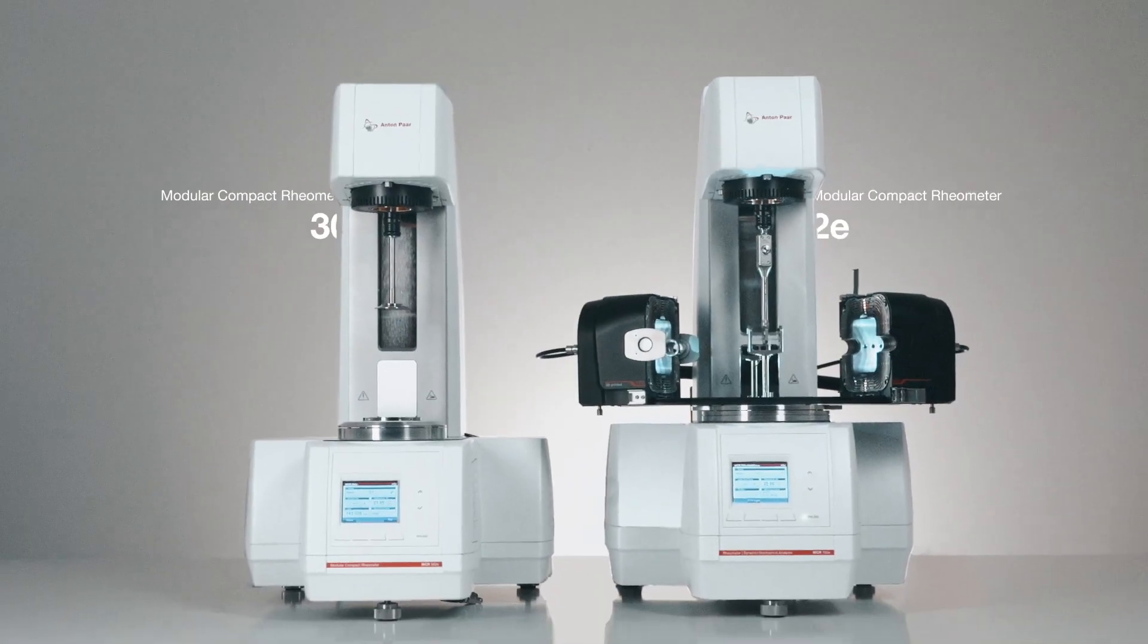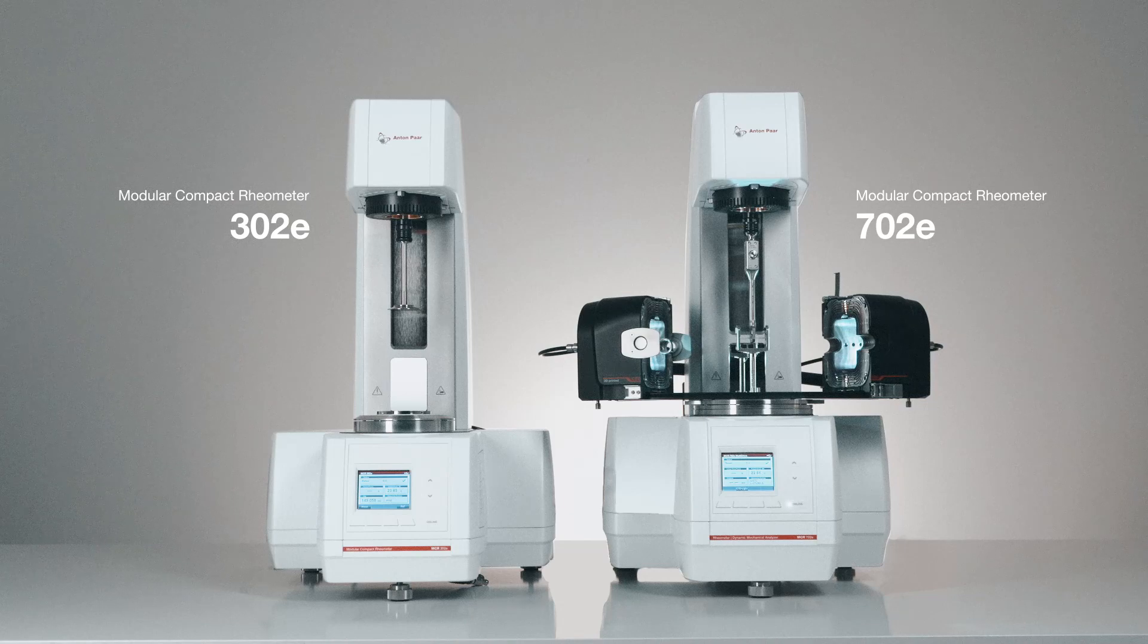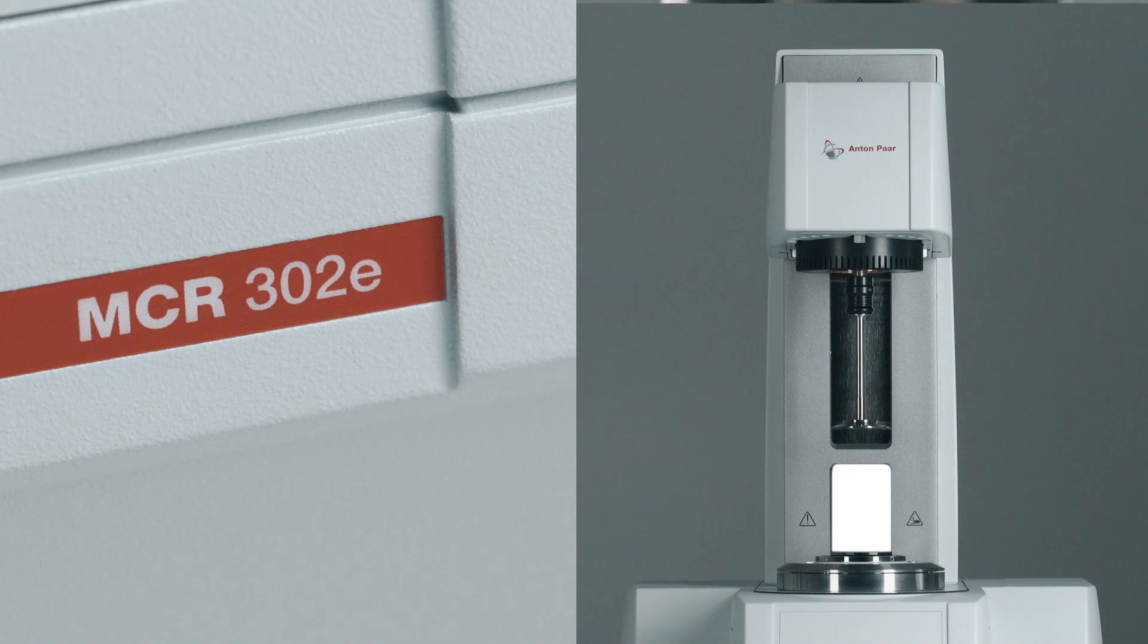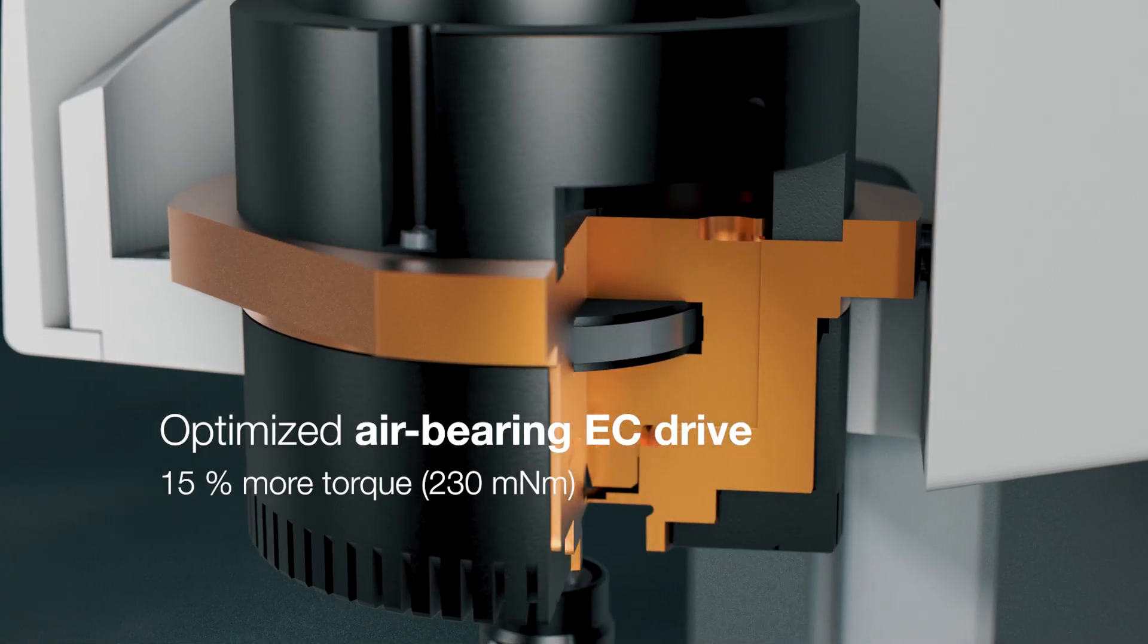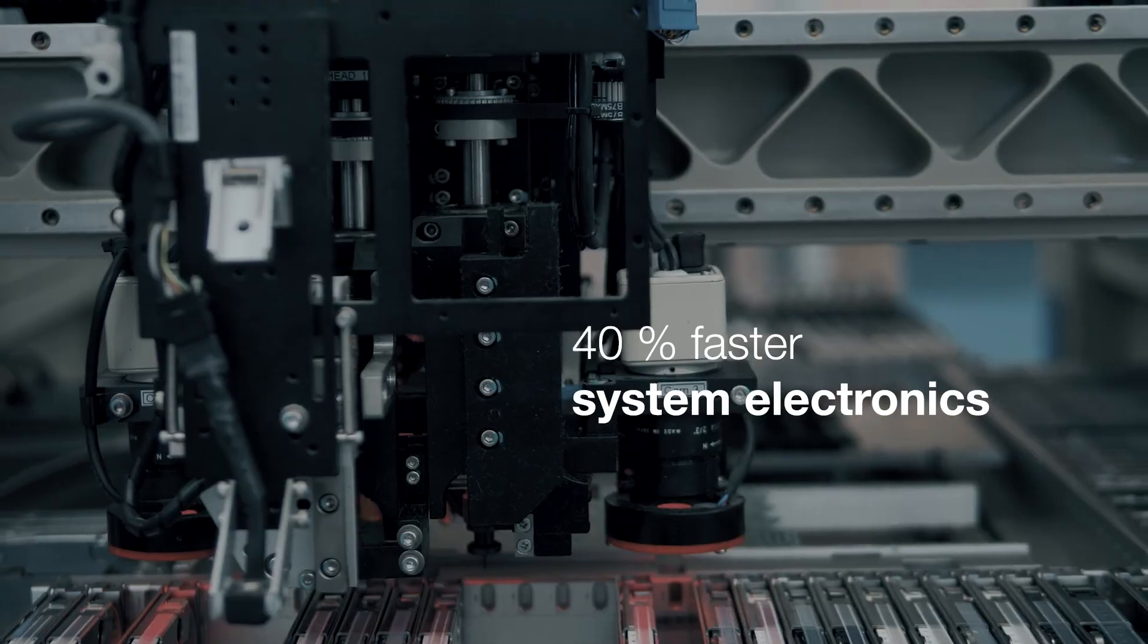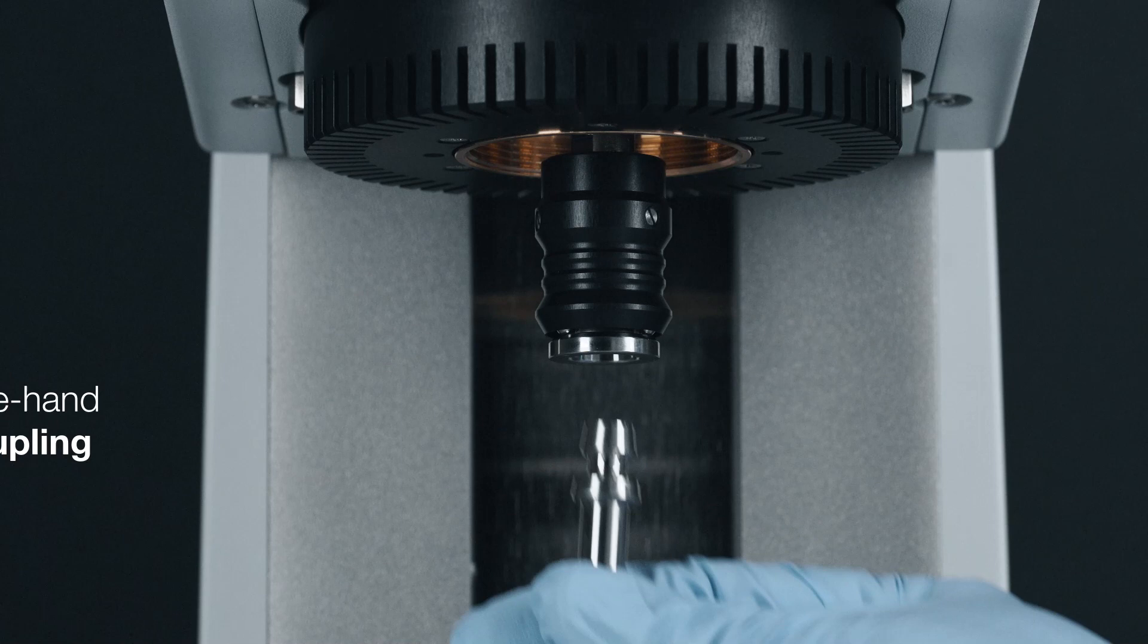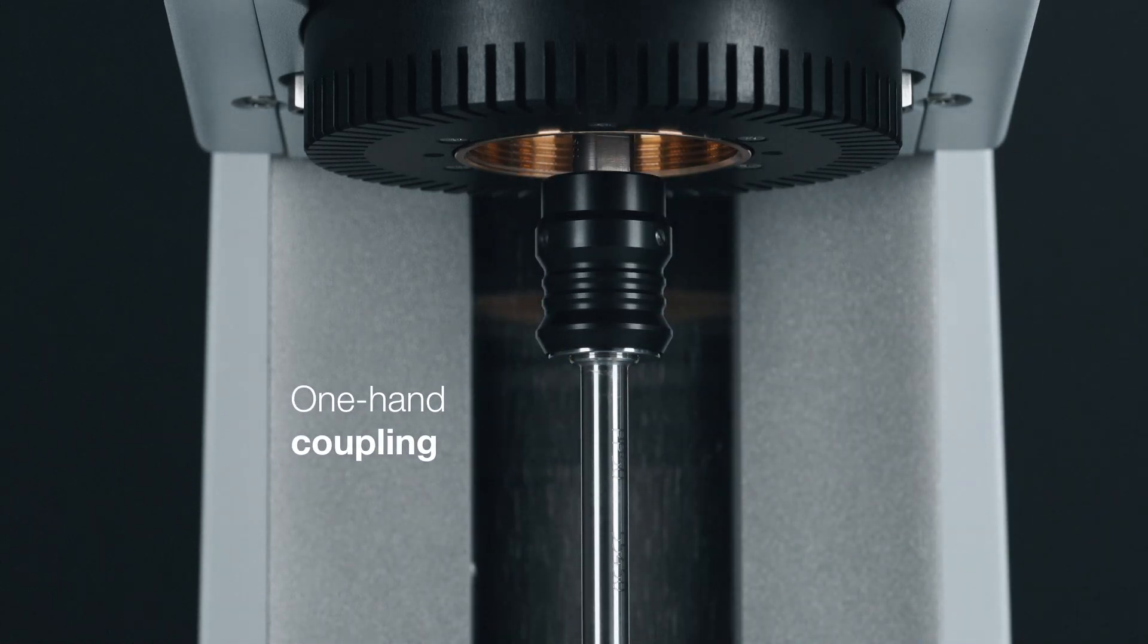MCR 302 and 702 are benchmarks in their segments. MCR 302 Evolution is the world's best-selling rheometer made even better. Optimized air bearing EC drive. 40% faster system electronics. Improved thermal management. And one-hand coupling. Ingredients for success in challenging environments.